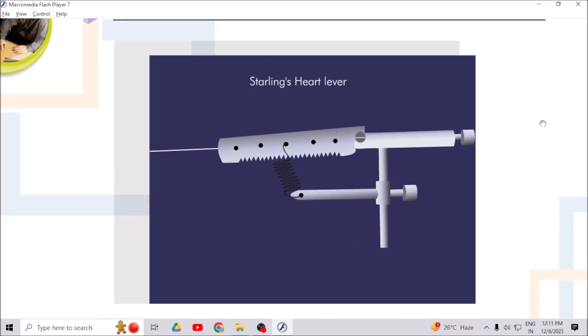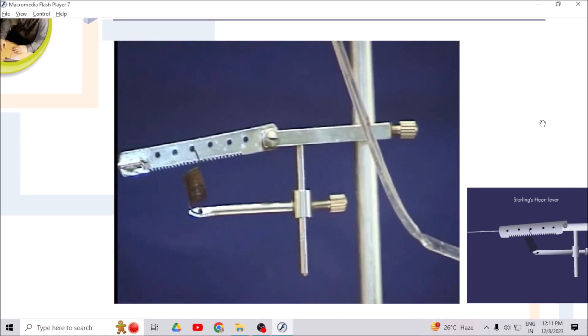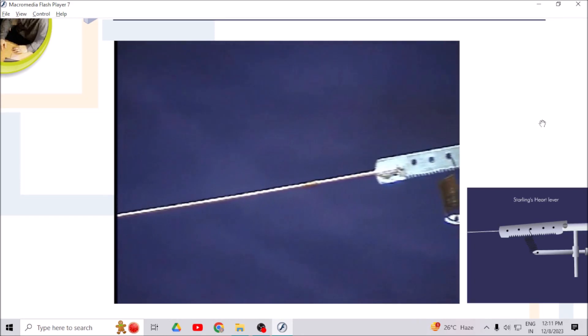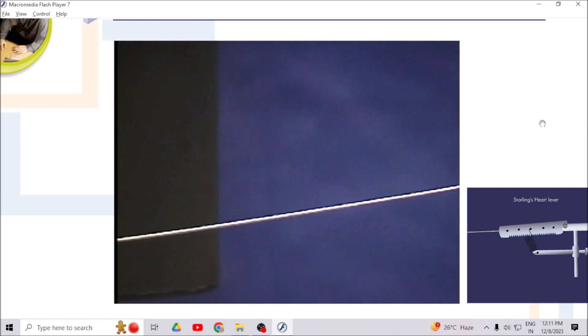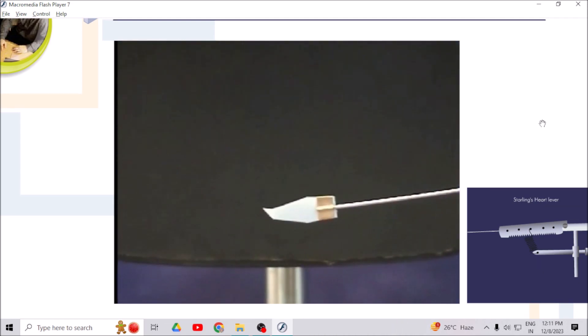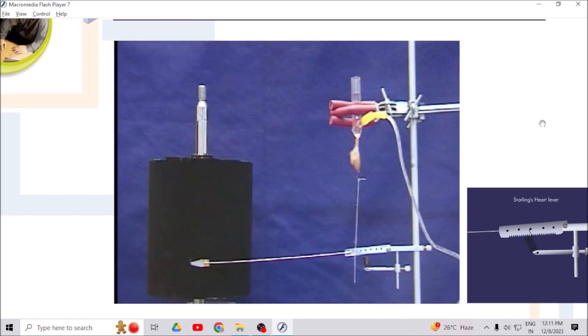Starling's heart liver is used to record the contractions of heart. With the help of the tip of this lever, recording is done on smoked paper fixed on circular cylinder. It is made up of stainless steel or light aluminum. The prelim of this lever is connected to isolated heart with the help of thread. One can adjust tension and magnification by altering the height of this lever.